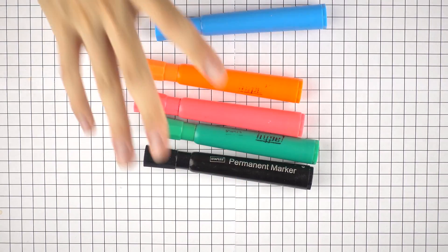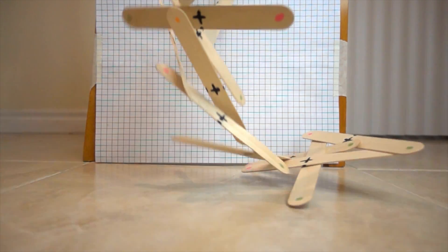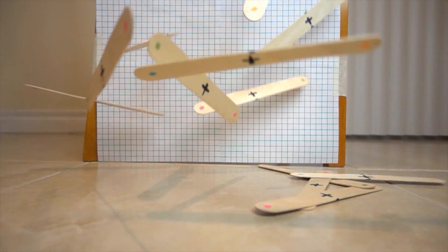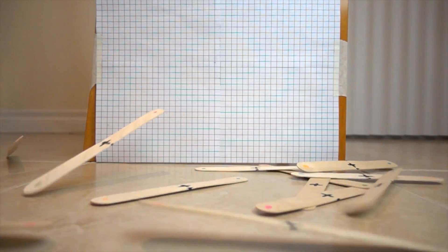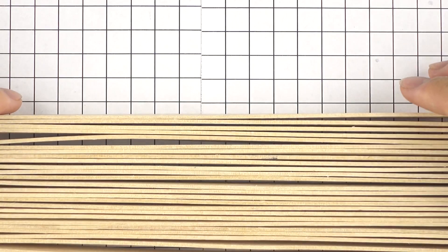We could use these to make some marks on the popsicle sticks so that even when the popsicle sticks are rotating we could still easily track it in a video analysis software. I bought my popsicle sticks in the local dollar store.